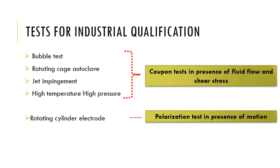On the other hand, polarization tests may be carried out in the case of the rotating cylinder electrode, where we have a typical three-electrode system and the working electrode rotates so that there is efficient coverage of the inhibitor all over its surface. The change in corrosion rate or corrosion current density with respect to the rotation speed is also measured.